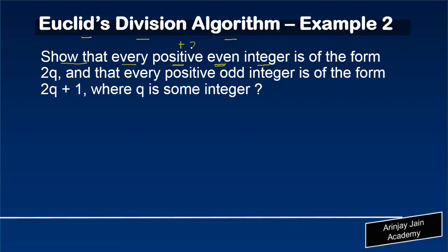which means this will cover plus 2, plus 4, plus 6, and so on, is of the form 2q, so you have positive even integer.